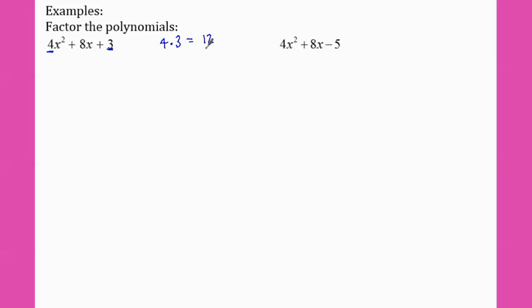Now I'm going to make a list of things that multiply to give me twelve. I could do one and twelve, two and six, or three and four. I want to pick the pair that adds up to eight because that's my b term. So two and six add up to eight.